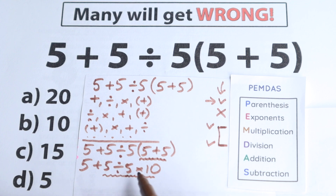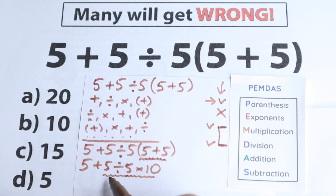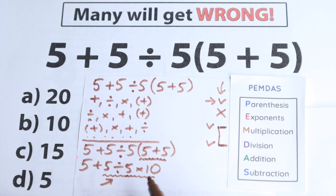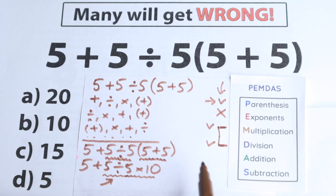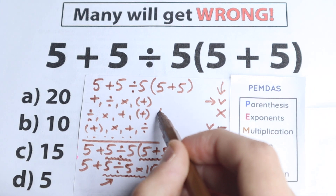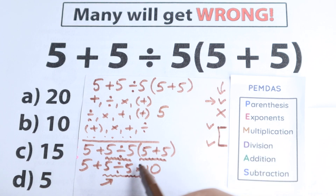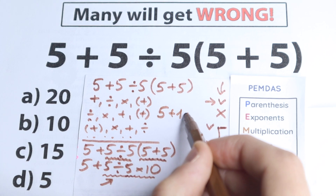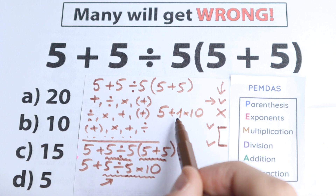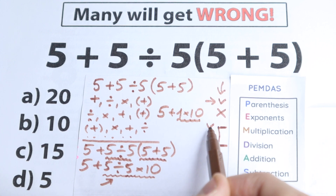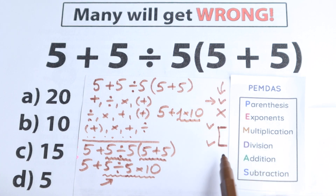The division sign is the first sign from left to right — the second one is multiplication and the first one is division — so we need to divide first. So 5 divided by 5 equals 1, giving us 5 plus 1 times 10. Right here we need to multiply next, because we need to complete the multiplication and division group before we can add.